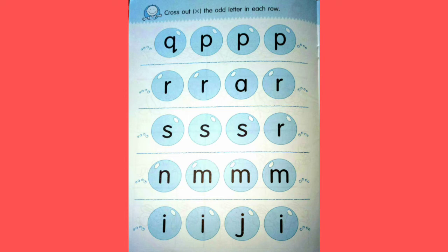Then open Twinkle ABC Book page 10. Cross out the odd letter in each row.